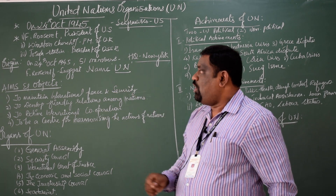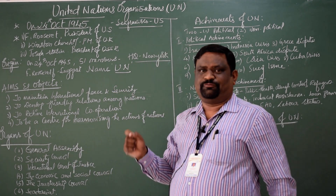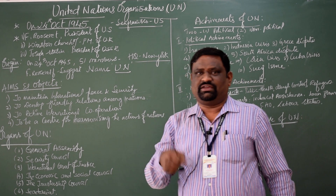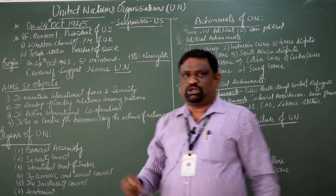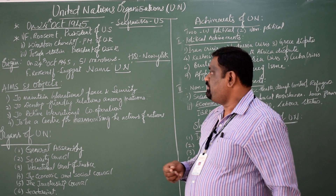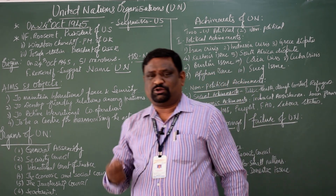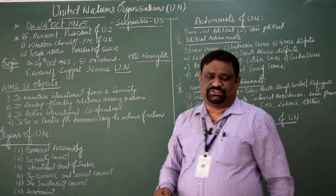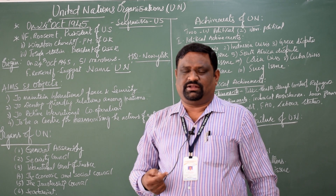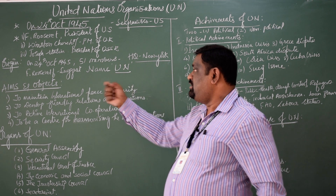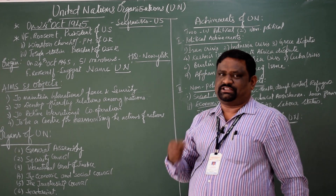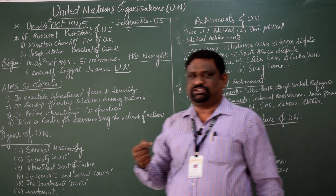Coming to the origin, on 24th October 1945, with 51 countries including India signing, the UN was established with its headquarters in New York City. One more very important piece of information: it was Franklin Roosevelt who suggested the name 'United Nations' for this organization.